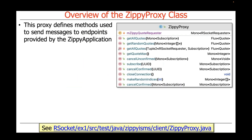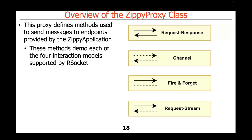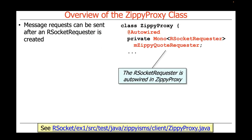Now let's take a look at the proxy side. This is a proxy we write because there's really nothing out of the box that will do it justice. The methods in the proxy demonstrate each of the four interaction models supported by RSocket: request-response, channel, fire-and-forget, and request-stream. For this short walkthrough, I'll just talk about a couple of them — the code has all of them.